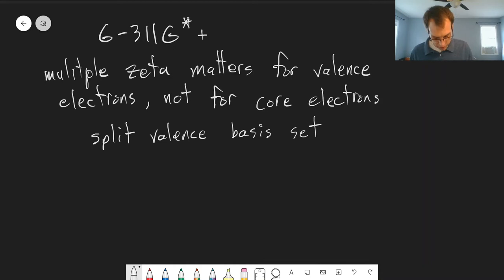And the way the notation works here is that everything that comes before the dash applies to the core electrons. So, something like carbon, that'd be the 1s electrons, or as you get further down the periodic table, it's going to be multiple shells. And everything after the dash, of course, relates to the valence electrons.